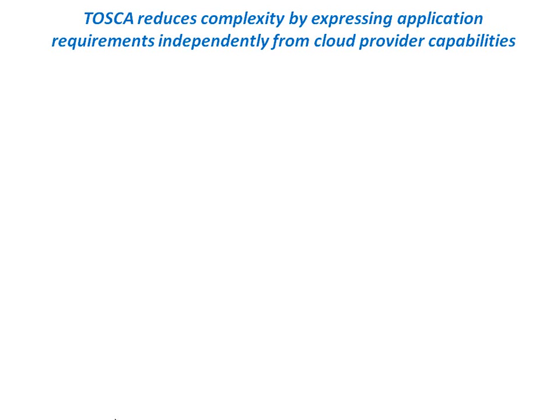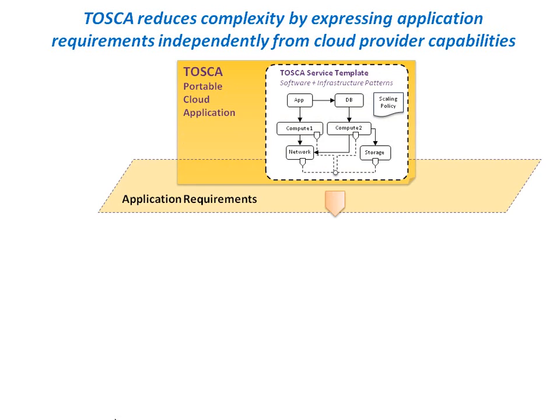So how can Tosca templates manage to be agnostic to different cloud implementations? The key is that Tosca models express application requirements independently from cloud infrastructure capabilities. A portable application modeled in Tosca includes a scalable application and database that has modeled its compute, storage and networking in terms of abstract requirements — for example, compute power, storage speed or networking throughput — as well as fault resiliency, described without any ties to any specific infrastructure architecture.